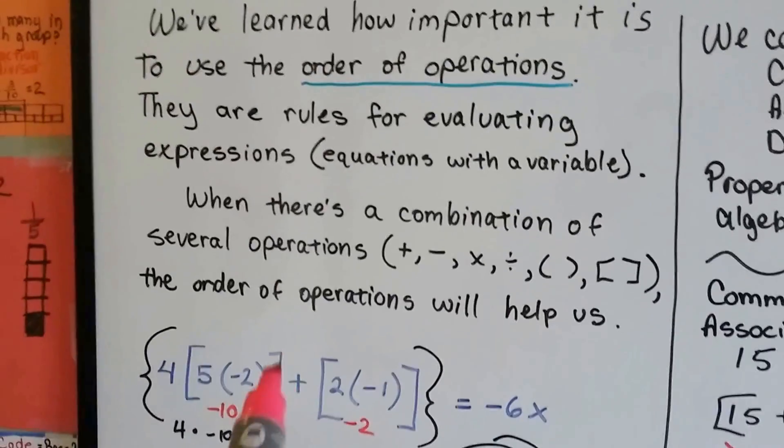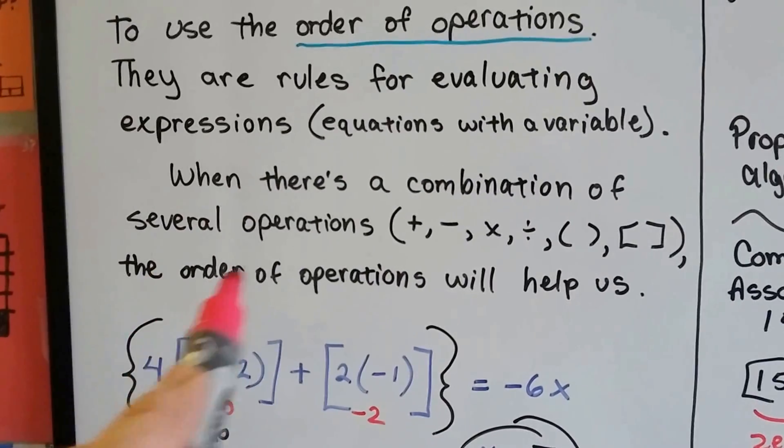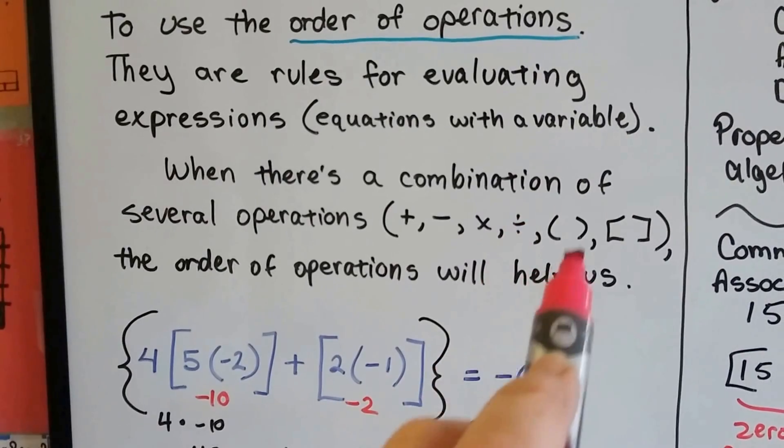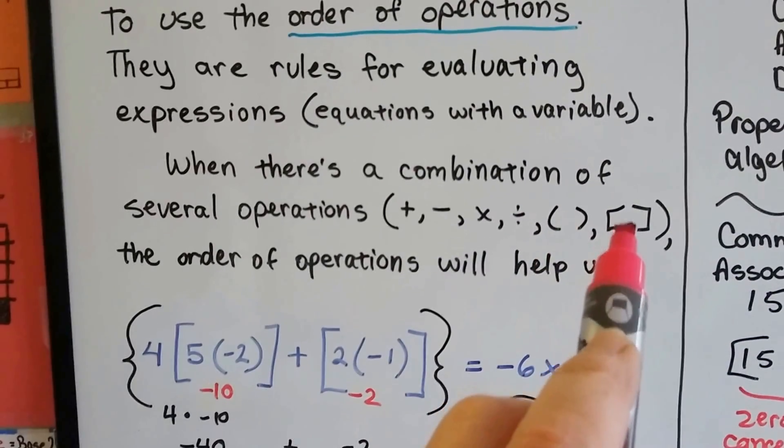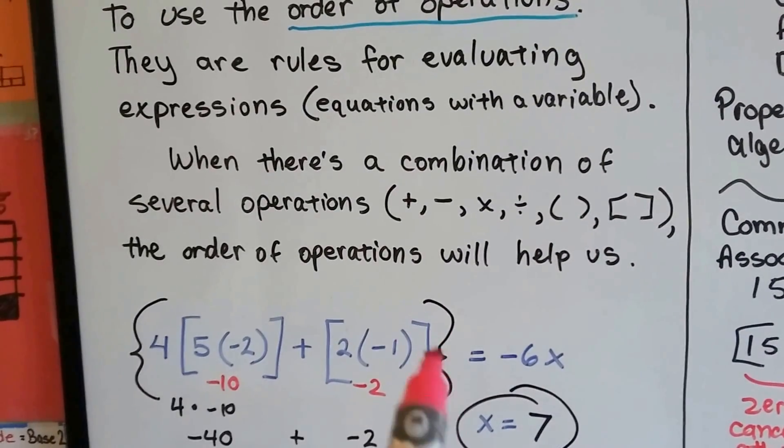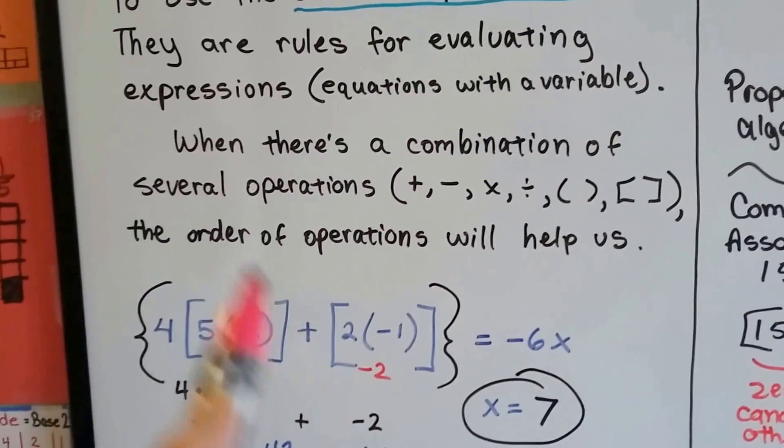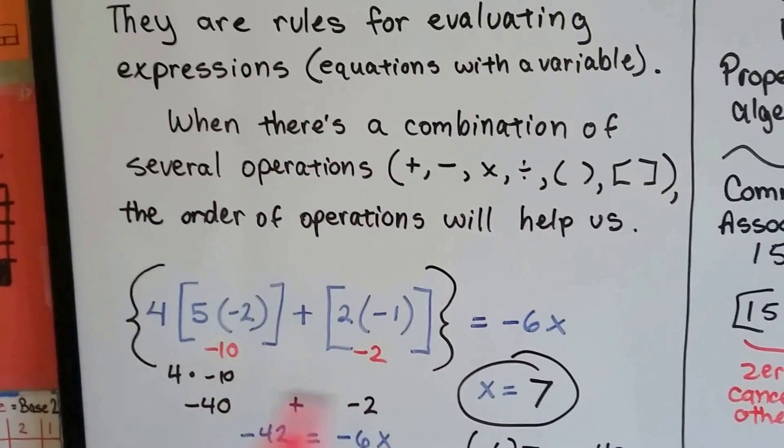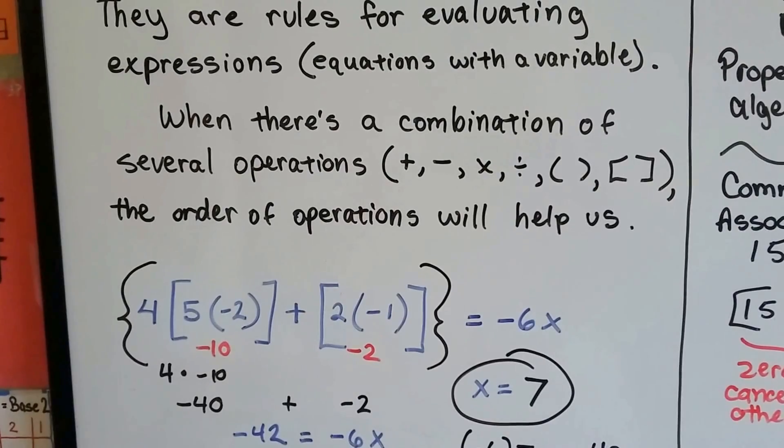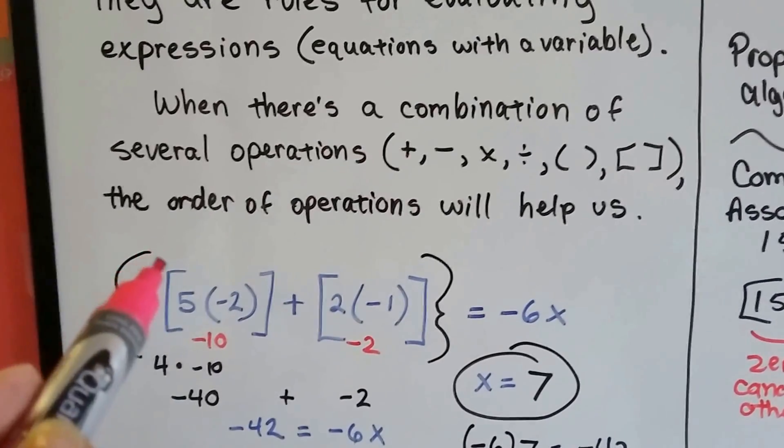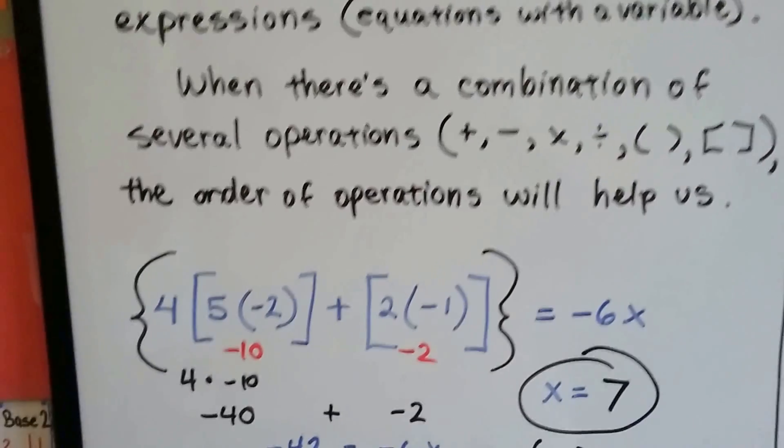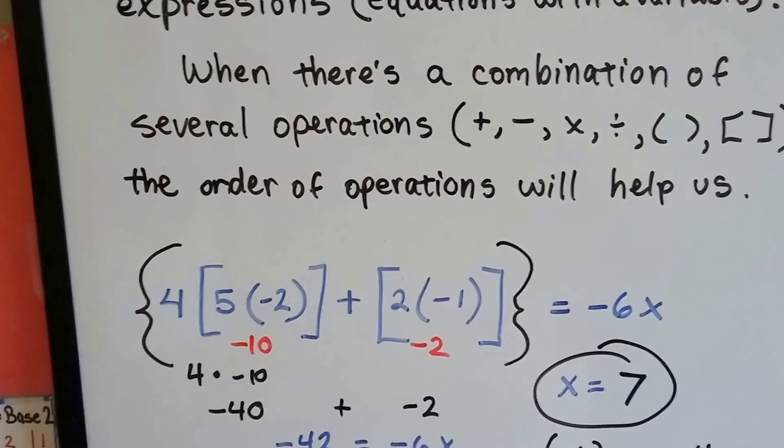When there's a combination of several operations - plus, minus, multiply, divide - we've got our parentheses, our brackets, and now these little funny squiggly things are braces. When we have all these things in an expression, it can be very confusing. So we follow the order of operations and it helps us out. It helps us break it down into smaller pieces so it's easier to solve.